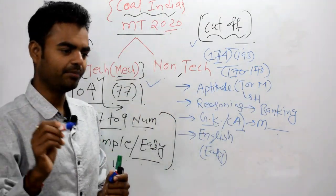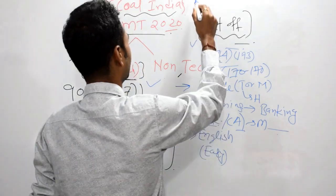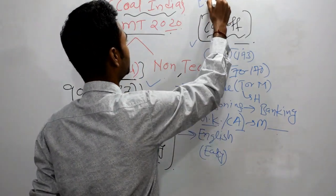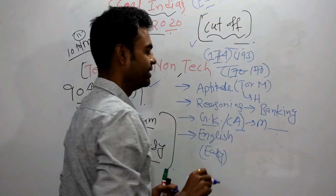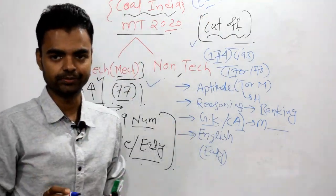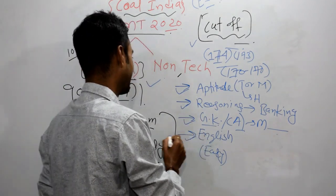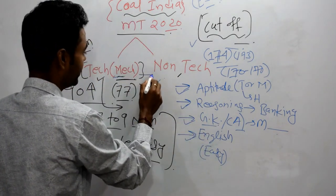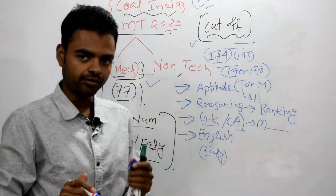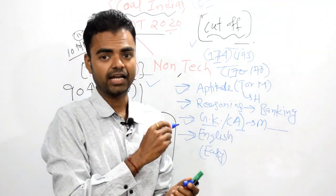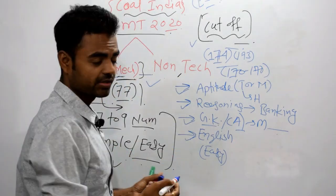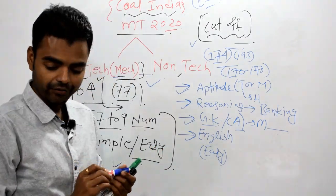You know why? Let me tell you why. Because almost all the people who appeared in ESE, they have written this examination. They are very good in aptitude, reasoning, GK as well as English as well as technical part. That's why cut-off will be like this. Even negative marking was not there.